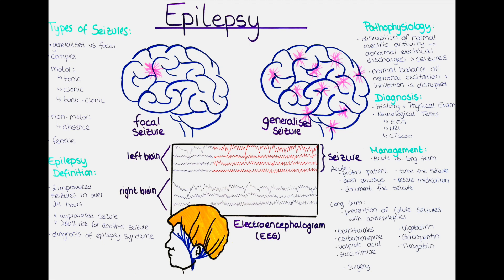The underlying pathophysiology of epilepsy involves the disruption of normal electrical activity in the brain, leading to the generation of abnormal electrical discharges that spread throughout the brain and cause seizures. The brain is composed of millions of neurons that communicate through electrical and chemical signals, generated by the movement of ions across the neuronal cell membrane, creating an electrical potential. In people with epilepsy, the normal balance of neuronal excitation and inhibition is disrupted, leading to excessive excitation and/or reduced inhibition. This can result from various factors such as genetic mutations, brain injury, inflammation, or metabolic disorders.